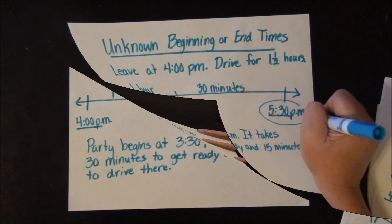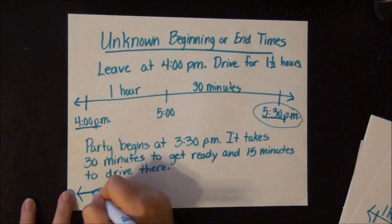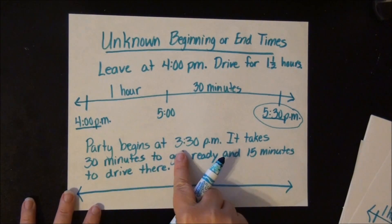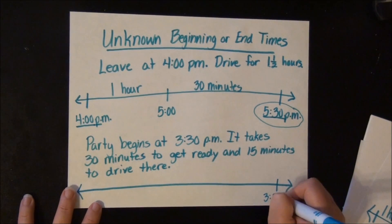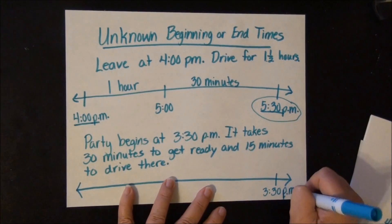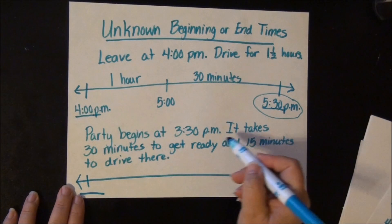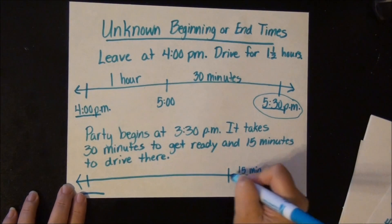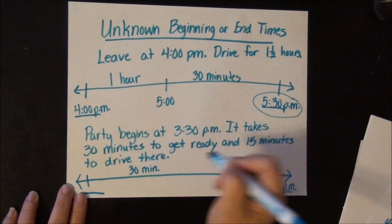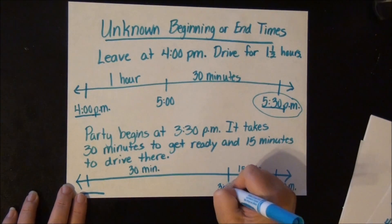Let's say you're going to a birthday party that begins at 3:30 p.m. and it takes 30 minutes to get ready and 15 minutes to drive there. What time should you start getting ready? The party begins at 3:30 p.m., but that's really your end time. So our end time is 3:30 p.m. and we don't know what time to start getting ready — that's our beginning time. You have to watch for that in word problems because they try to trip you up. So we have an unknown beginning time, 15 minutes to drive and 30 minutes to get ready. Working backwards: 3:30 minus 15 minutes — 30 minus 15 is 3:15 p.m.